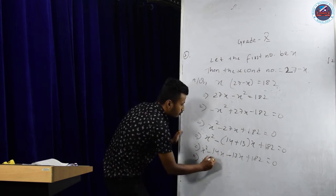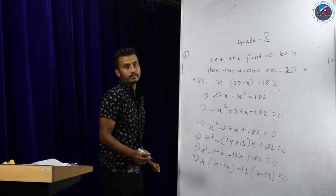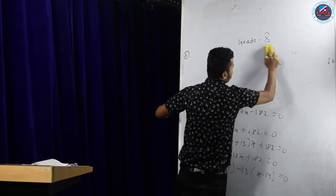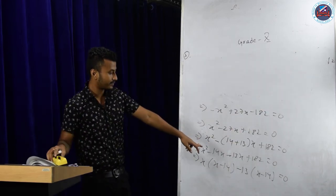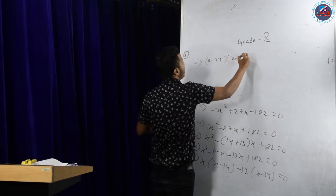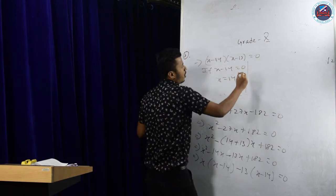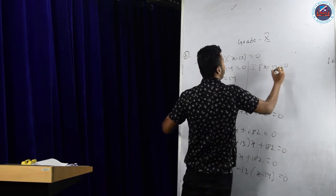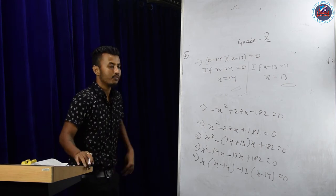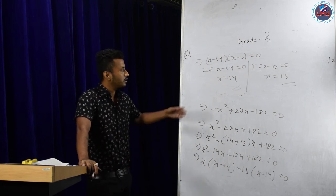Taking x common: x(x minus 14), minus 13 common: minus 13(x minus 14) equals zero. This becomes (x minus 14)(x minus 13) equals zero. So either x minus 14 equals zero, giving x equals 14, or x minus 13 equals zero, giving x equals 13. The two numbers are 14 and 13 — their sum is 27 and their product is 182. That completes question number 3.